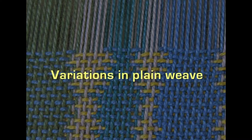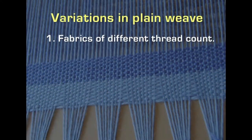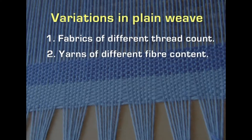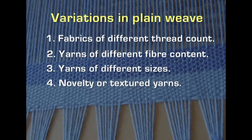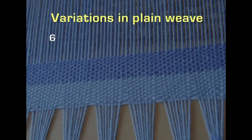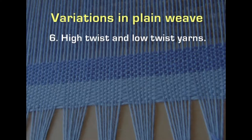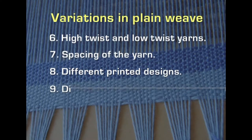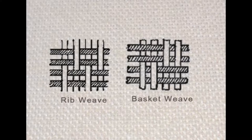Variations in plain weave can be produced by using different thread counts, different fiber content in the yarns, yarns of different sizes, novelty or textured yarns, yarns with contrasting colors, and yarns with high and low twist combined either in the warp, weft, or both. Spacing of yarns also produces variety. Two other variations are possible: the rib weave and the basket weave, which depend on the thickness and number of yarns used as a single yarn.